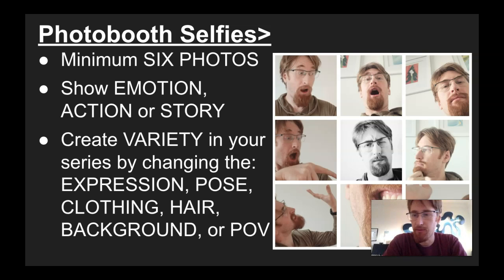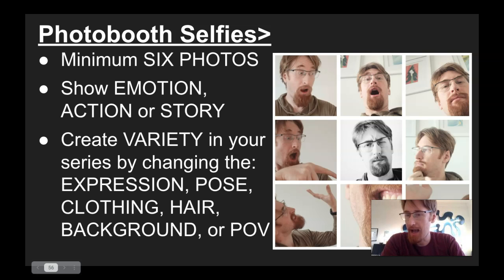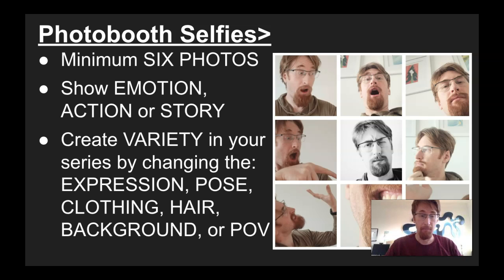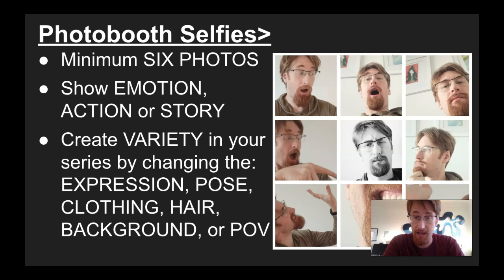To recap for your photo booth selfie assignment: take a minimum of six photos, but I highly recommend taking more so that you have editing options. Show an emotion, action, or tell a story, and create some variety in your pose by changing things such as expression, pose, clothing, hair, background, or point of view. You don't need to do all of those things, but aim to change at least two qualities. Right now, upload all of the pictures you've taken to Google Classroom. Next week we will arrange these into a grid. I hope everybody is safe and well — I can't wait to see your photographs. If you have any questions, please email me and we can set up a time to meet. Thank you and have a great day!